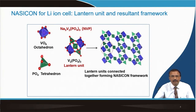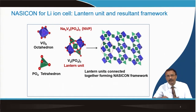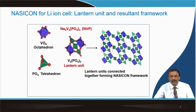Together, these constitute a so-called lantern structure, with three PO4 units and two V2 units forming the V2(PO4)3 lantern. In between, two crystallographic sites are occupied by three sodium ions. The Wyckoff positions are: one position for two sodium ions and another for the remaining one. These lantern units connect together to form the NASICON structure.